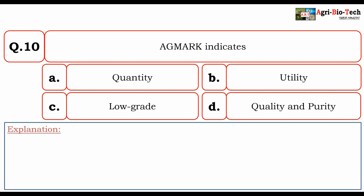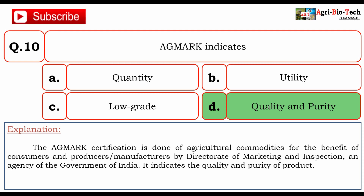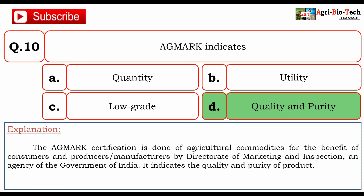Next question: Agmark indicates? Options are quantity, utility, low grade, and quality and purity. The correct answer is D. Quality and purity. The Agmark certification is done for agricultural commodities for the benefit of consumers and producers by the Directorate of Marketing and Inspection, an agency of the Government of India. It indicates the quality and purity of the product. So the correct answer is D. Quality and purity.